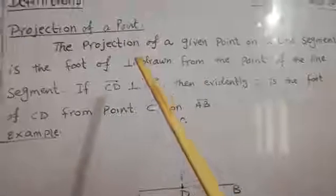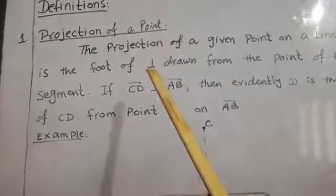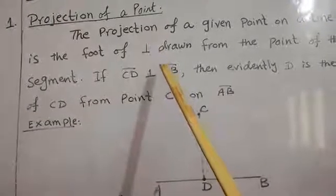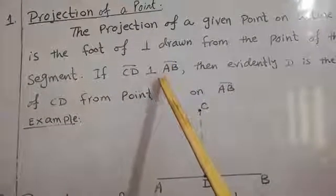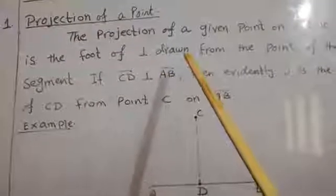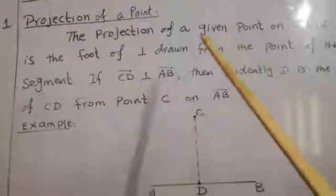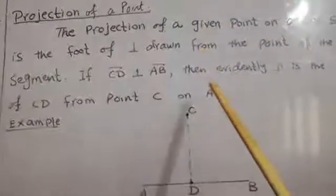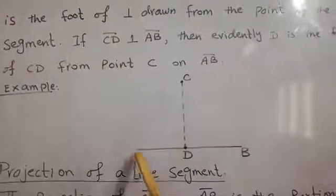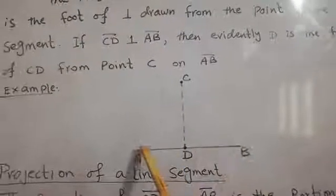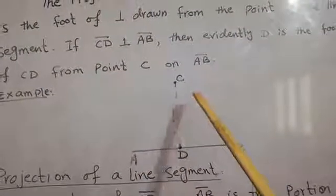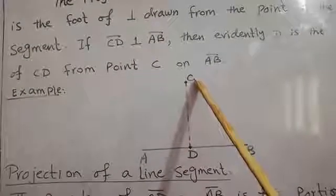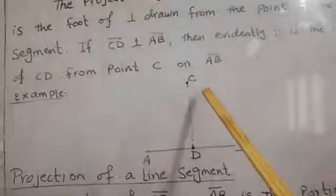Projection means — as you can observe the shadow of this pointing stick on the whiteboard — so projection means the shadow. If we are going to discuss about the projection of a point, for example we have a line segment AB, and there is another point C, and we are going to find the projection of point C on the line AB.